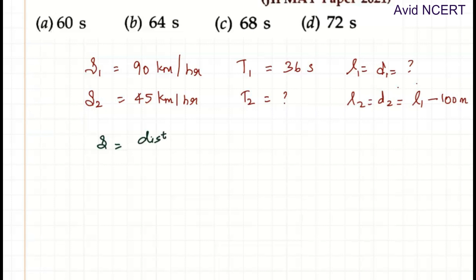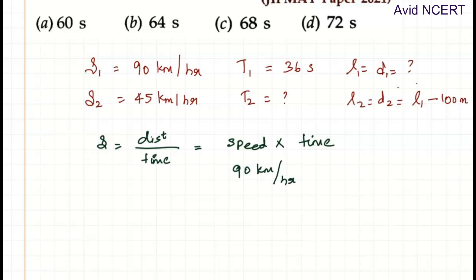From the first set of data, we can find the distance. The formula we know here is: speed equals distance by time. So distance equals speed multiplied by time. The speed we know is 90 km per hour, whereas time is in seconds.